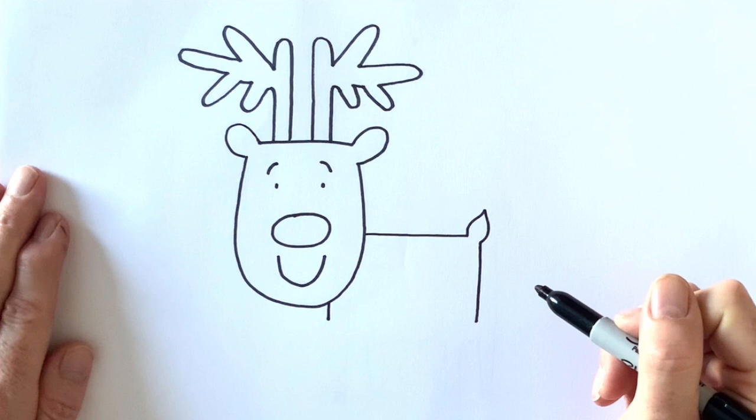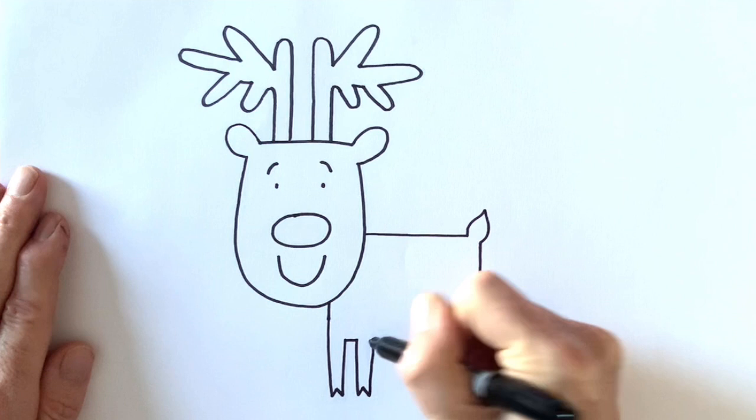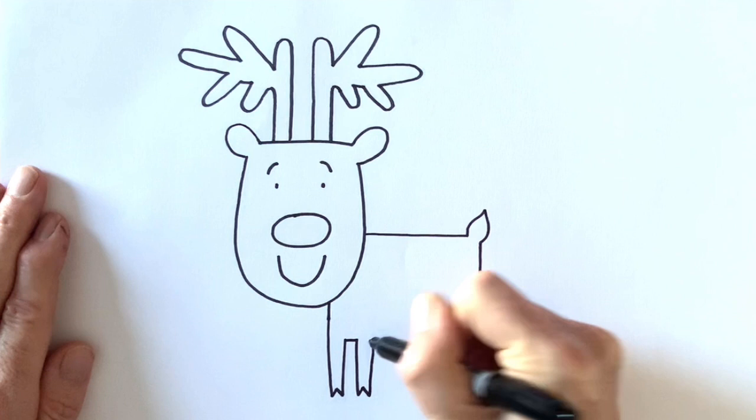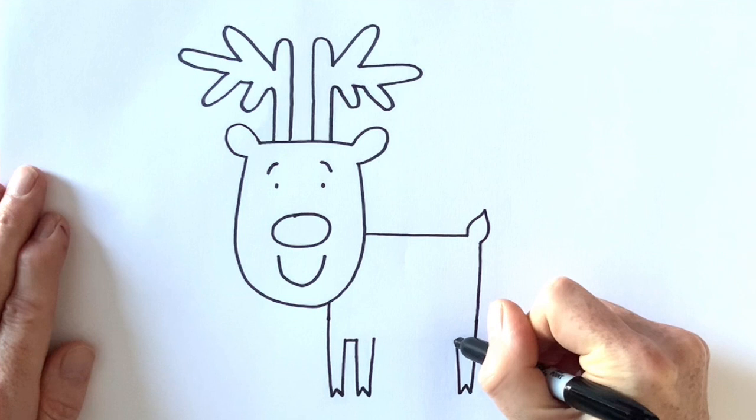So I'm going to draw two quite thin legs at the front. Now, can you see, I'm drawing little hoof shapes at the bottom. And then I'm going to go to the back and I'm going to draw two more legs with little hoof shapes on the bottom. And that's left me enough room in the middle to draw the reindeer's tummy.